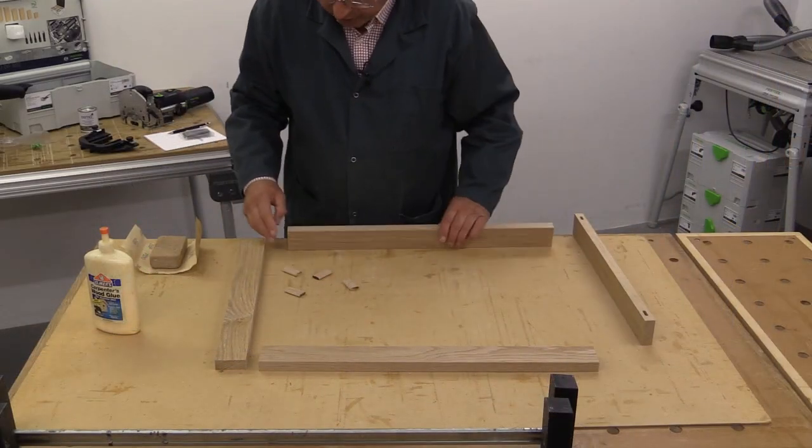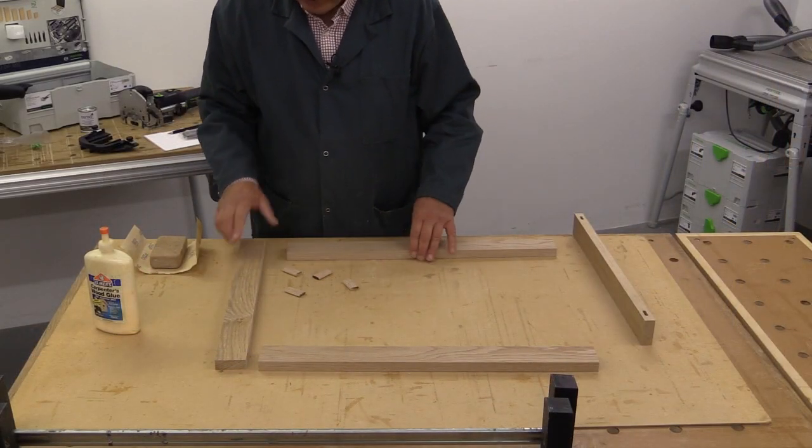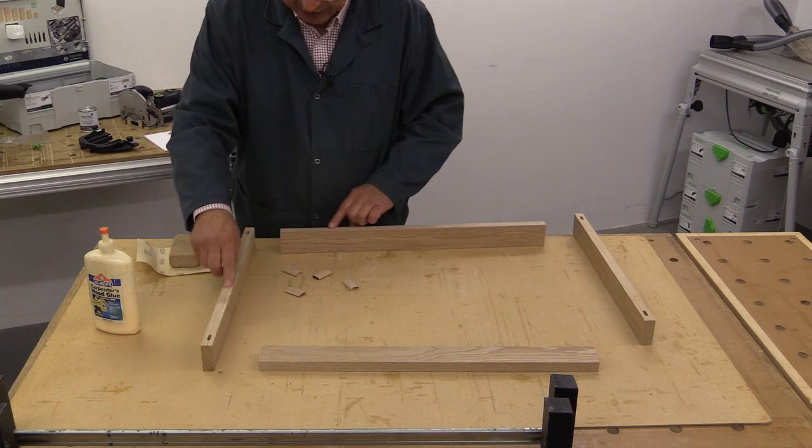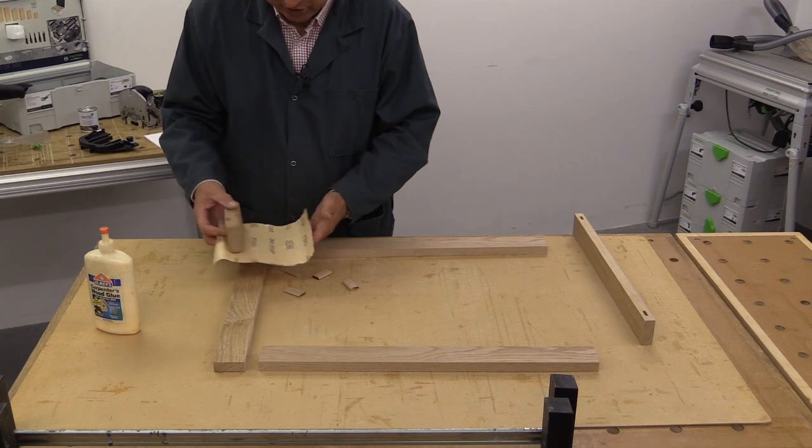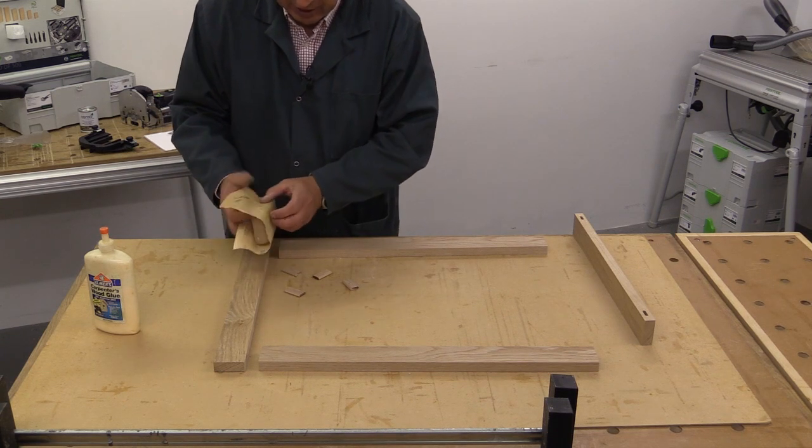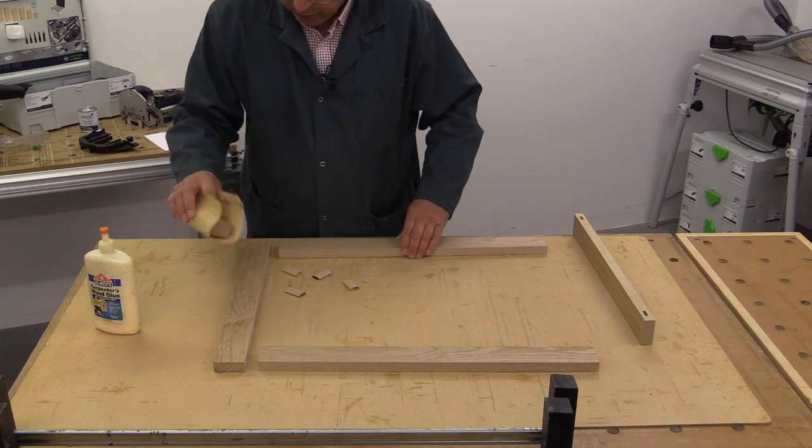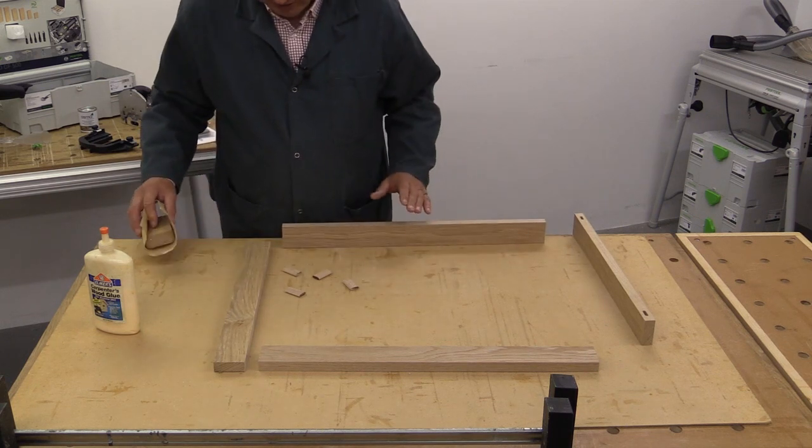Right we're all ready to glue up. I've laid it back out in the correct order and I've just given it a light sand on these inner edges which after it's all glued up would be tricky to do and I've just used a bit of 320 grit with a sanding block and just rubbed over it just a little bit.